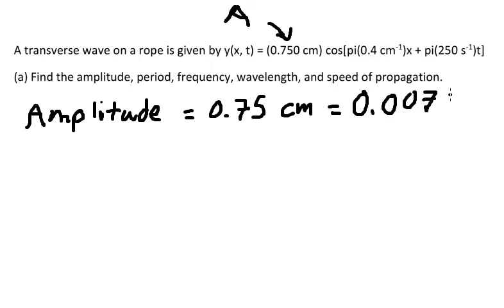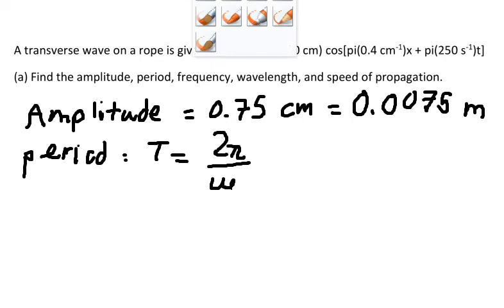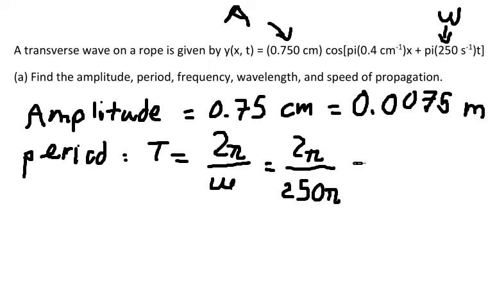To find the period, we use the formula: capital T equals 2π over omega. Omega here is this value shown. Simplifying these numbers, we get T equals 0.008 seconds.